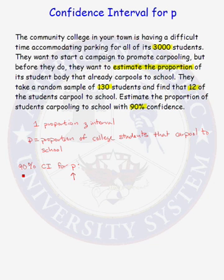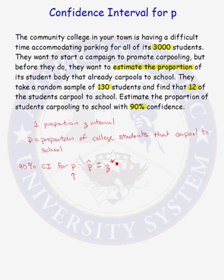What is the form of the 90% confidence interval for P? We need the estimate for P — our point estimate, which is our sample proportion — plus or minus a critical value. Since it's going to be a Z interval, for the one proportion Z interval it is a Z critical value times the standard error of our estimate P-hat, which is the square root of P-hat times 1 minus P-hat over N.